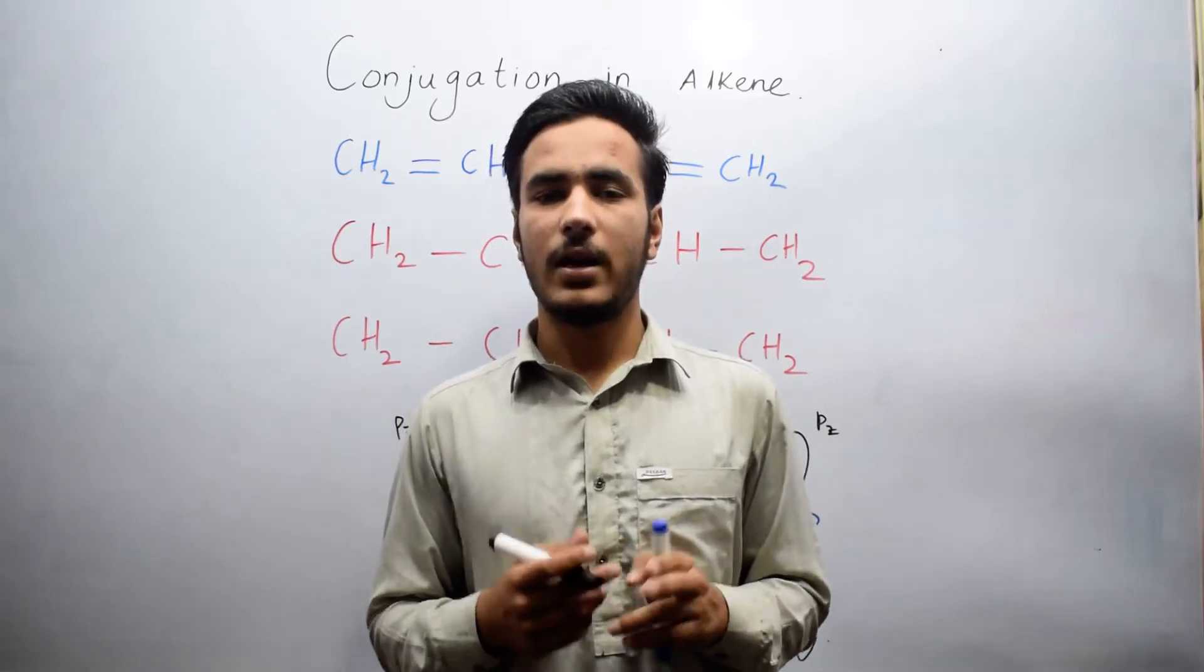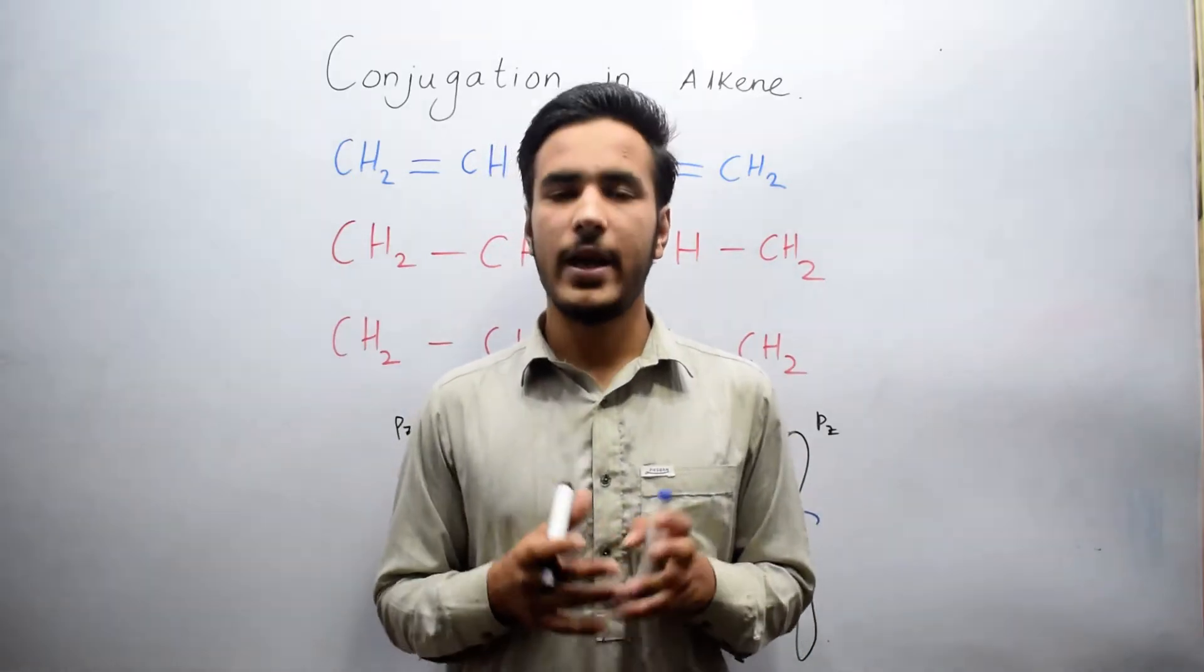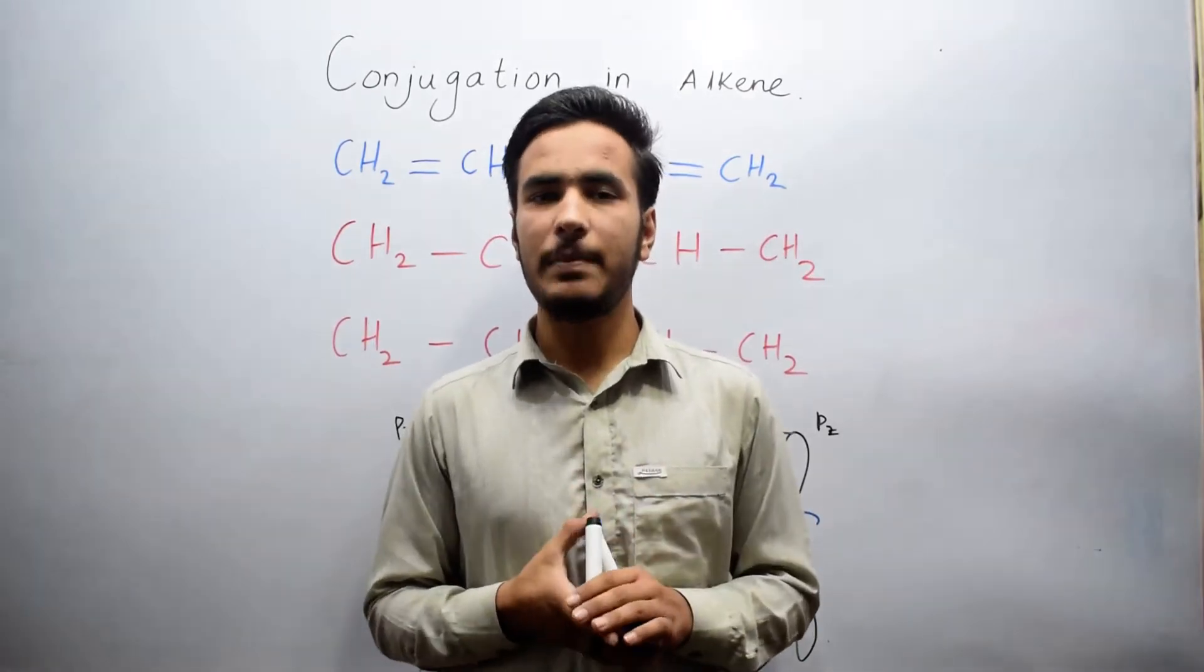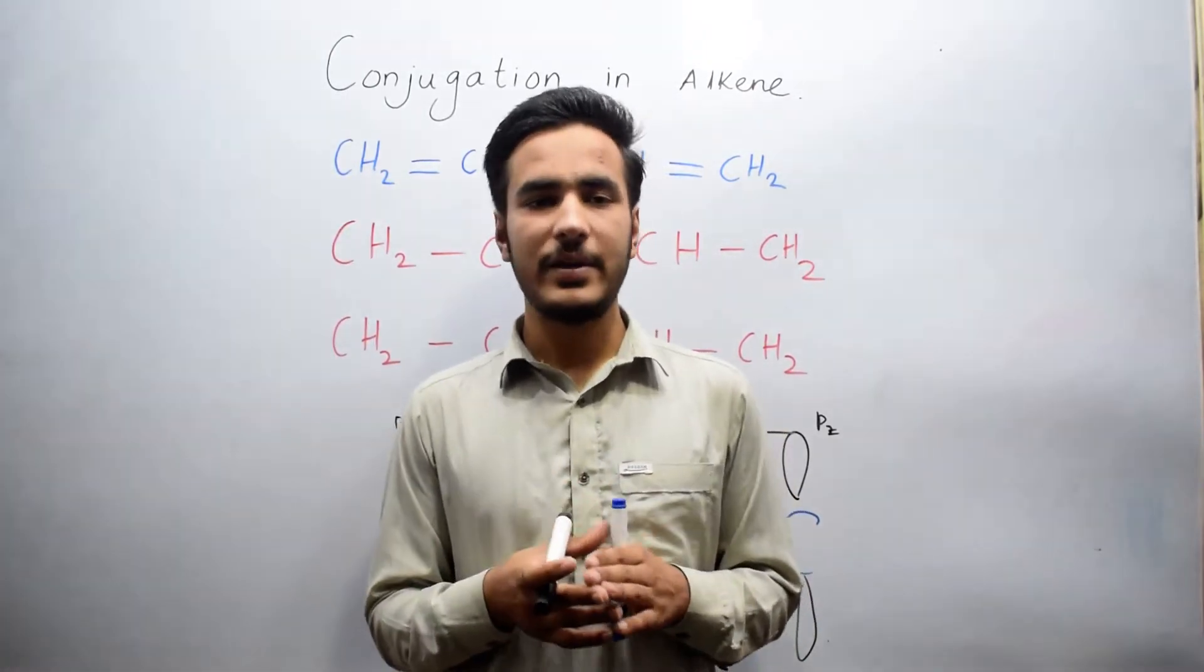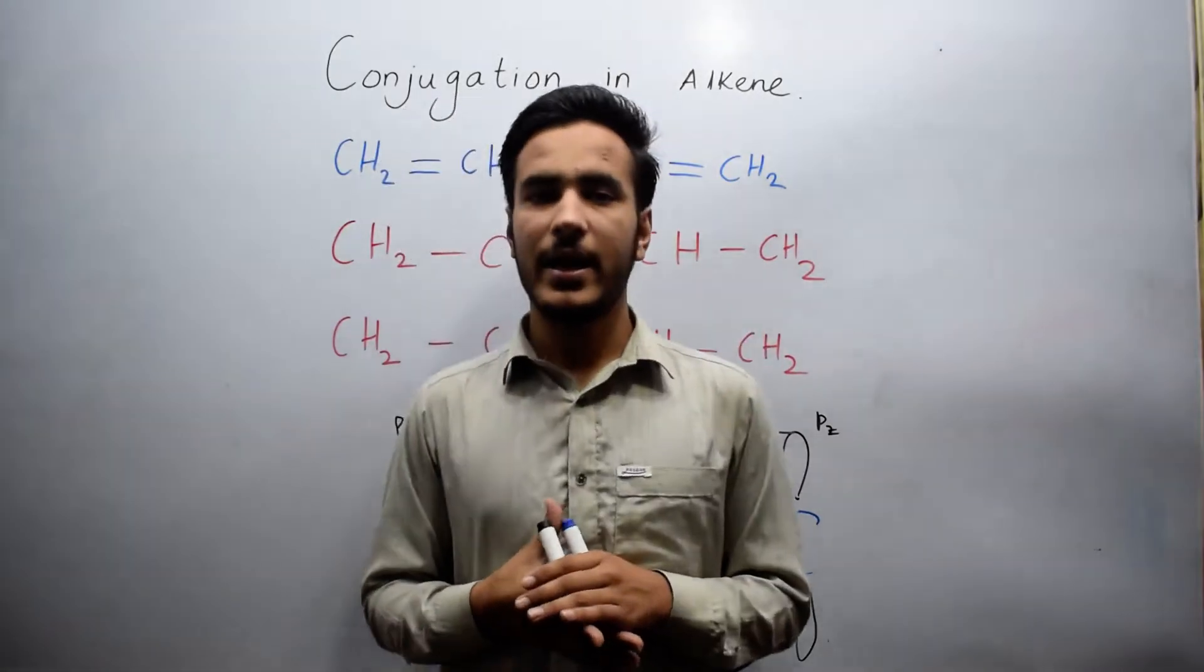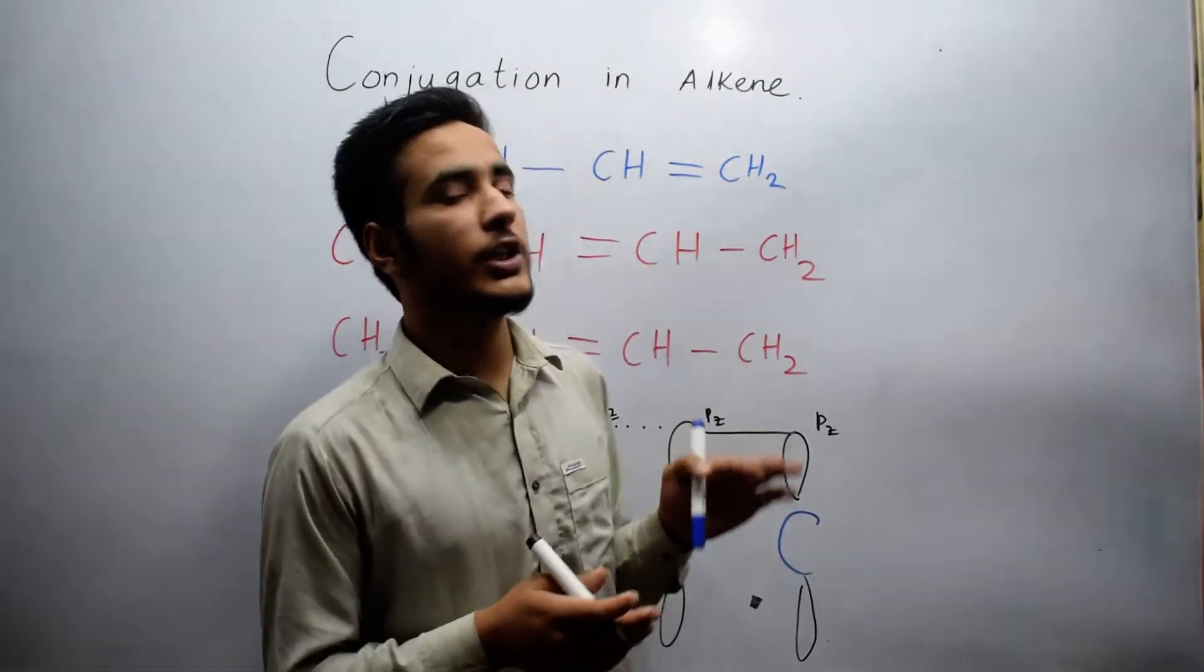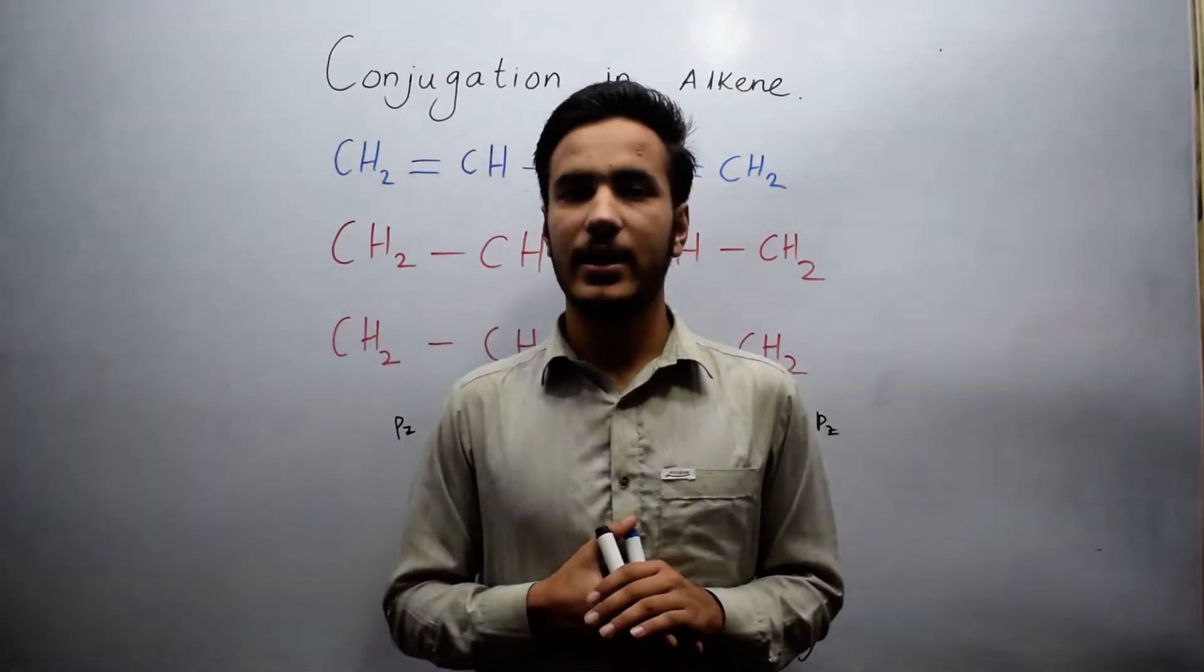Alkenes are unsaturated hydrocarbons in which carbon atoms are linked by at least one double bond. Sometimes conjugation occurs in alkenes. We will discuss conjugation and how it occurs in alkenes.